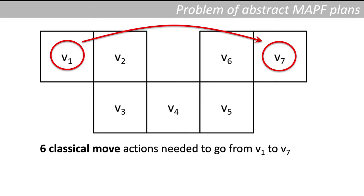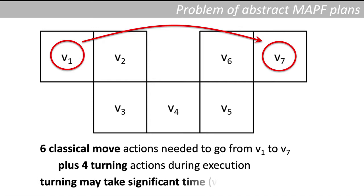But when we execute this plan on real robots, the robot needs to turn several times. We actually need to insert four turning actions to execute that plan. If turning takes significant time in comparison with moving, this may lead to desynchronization of plans because if the robot is moving just forward, it will move much faster. So what can we do with this?